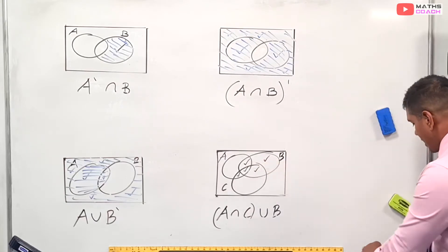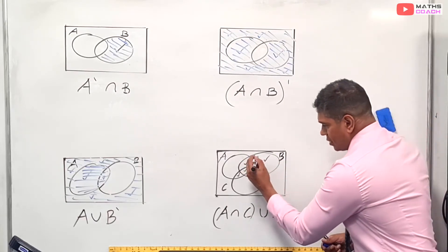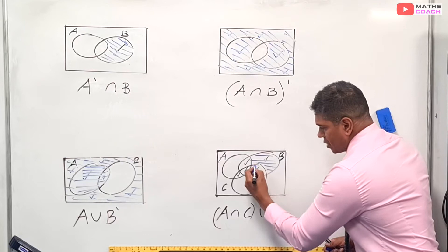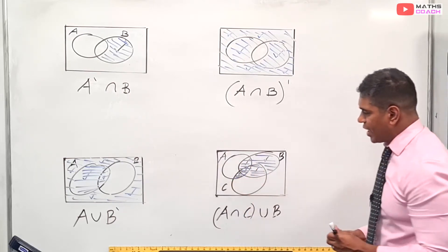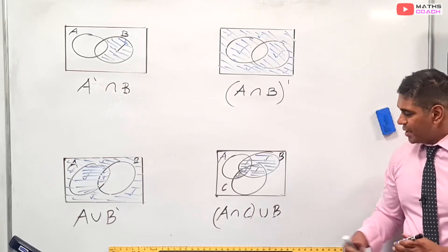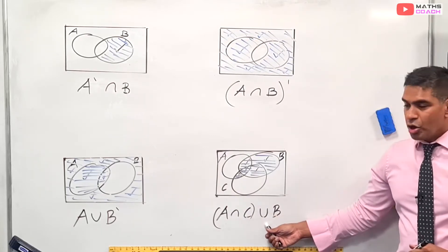So when you shade that in, I would have this bit, this bit here, this bit, this bit, and I can also have that bit there. And that is A∩C ∪ B.